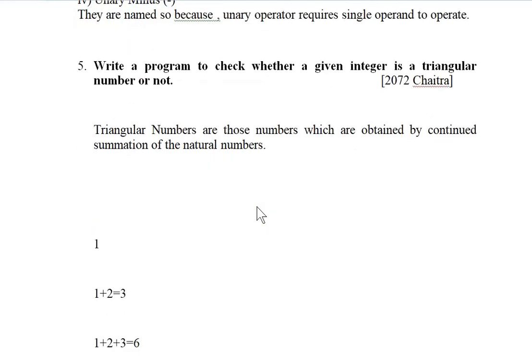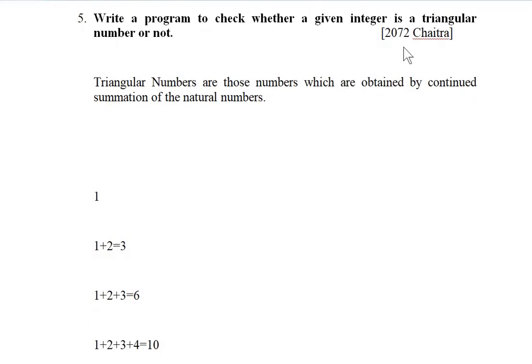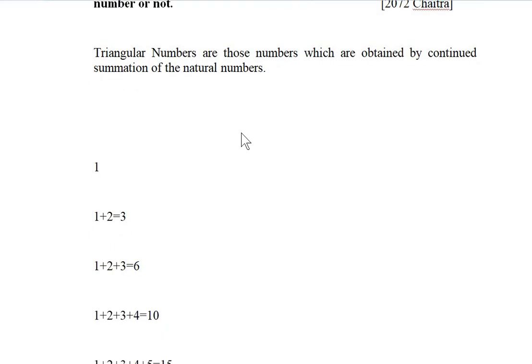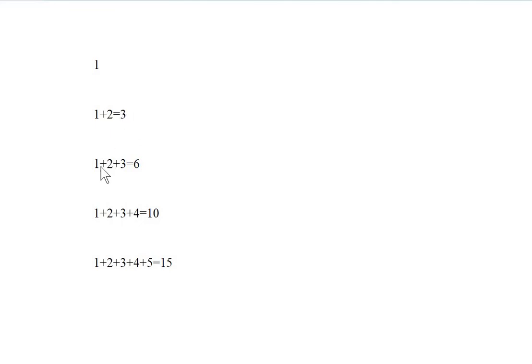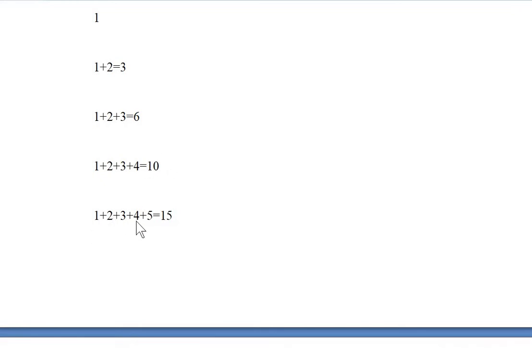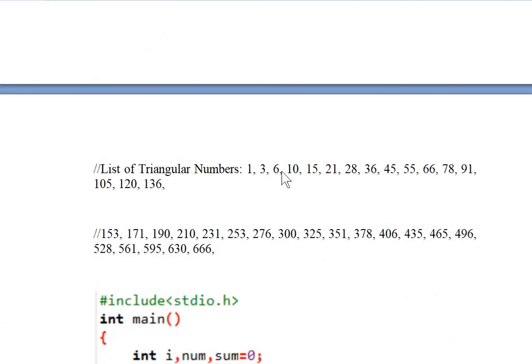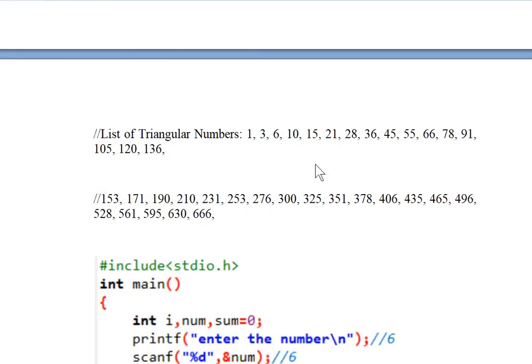The fifth question, asked in 2072 Chaitra for 8 marks, is: write a program to check whether a given number is a triangular number or not. Triangular numbers are those obtained by continued summation of natural numbers. For example: 1 is triangular; 1+2=3 is triangular; 1+2+3=6 is triangular; 1+2+3+4=10 is triangular; 1+2+3+4+5=15 is triangular. The list of triangular numbers is 1, 3, 6, 10, 15, and so on.